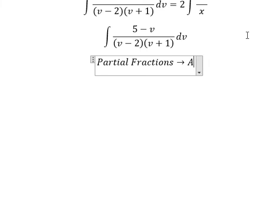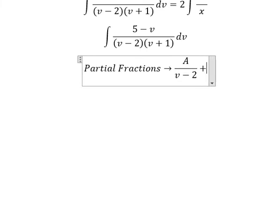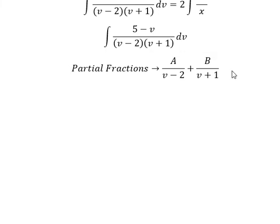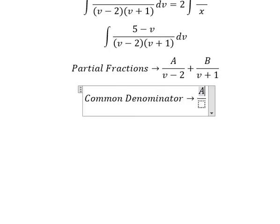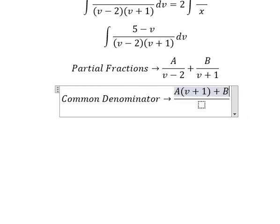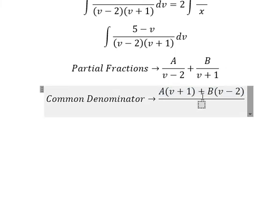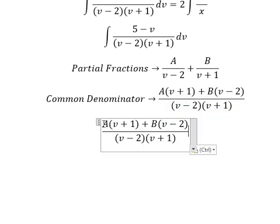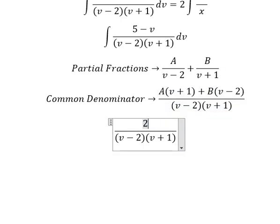I will focus on this integral. We use partial fractions: capital A over (v minus 2) plus capital B over (v plus 1). We find a common denominator, so A multiplied by (v plus 1) and B multiplied by (v minus 2). We arrange by terms of v: for v we have A plus B, and for the constant we have A minus 2B.